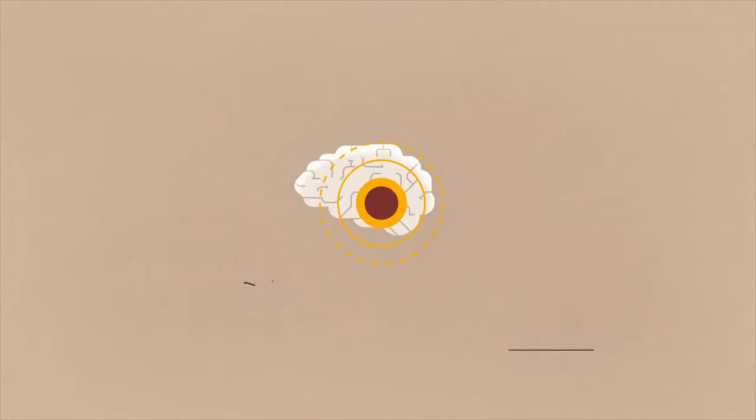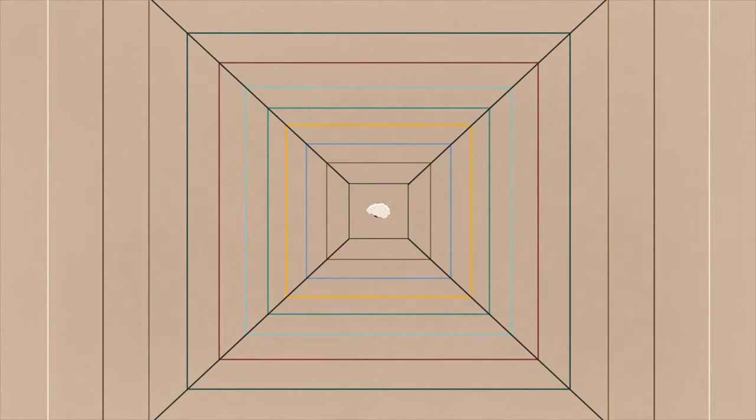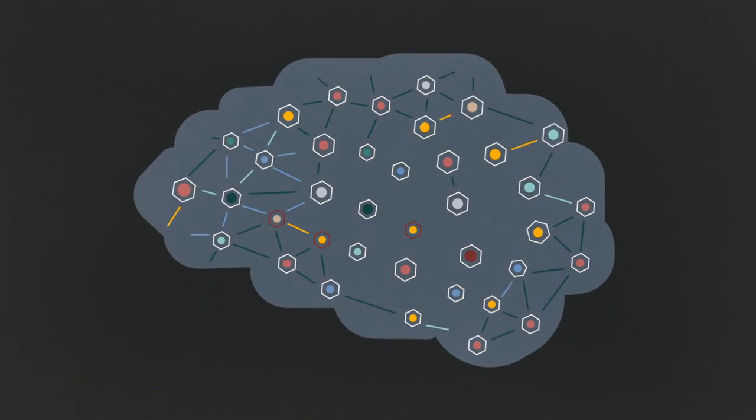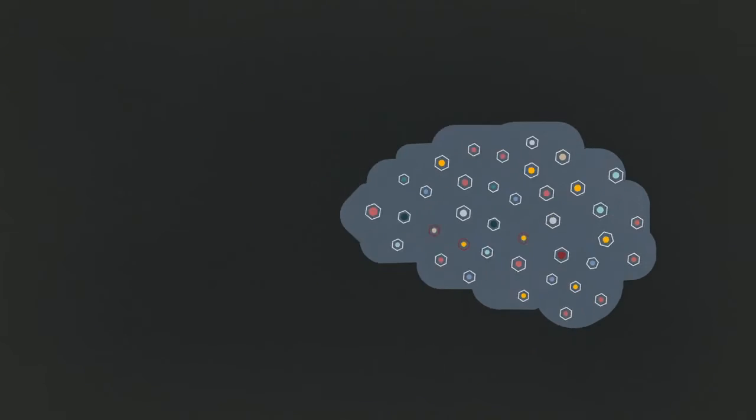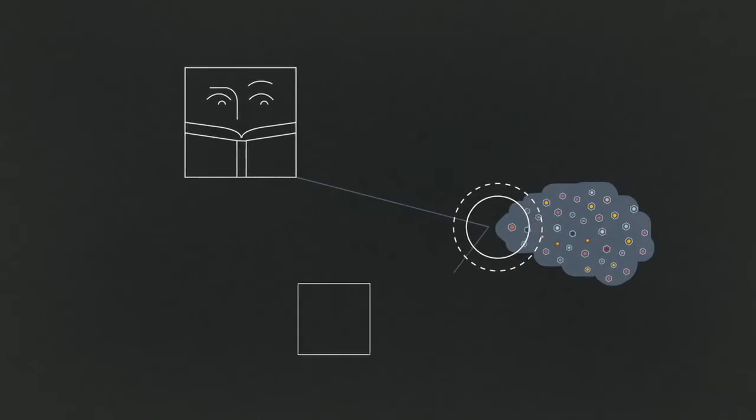That's not all, though. Cortisol can literally cause your brain to shrink in size. Too much of it results in the loss of synaptic connections between neurons and the shrinking of your prefrontal cortex, the part of your brain that regulates behaviors like concentration,